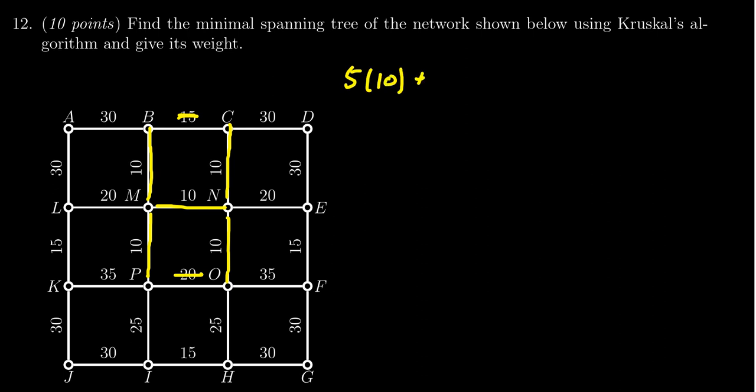Next, looking at edges worth 15, that seems to be the next increment. You have LK that's worth 15, EF that's worth 15, and IH which is worth 15. I'm not seeing any other acceptable 15s on the board, so we're going to grab those three. That's three times 15, which equals 45.